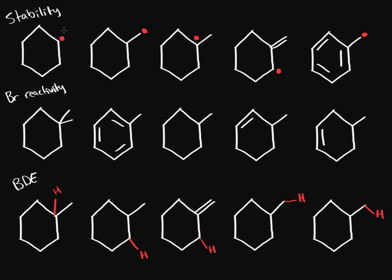Starting with the first one: we have a secondary carbon here, so we label it secondary. Here we have a primary carbon. Here we have a tertiary carbon. Here we have a secondary that's next to a carbon with a double bond, so we can have resonance — we're going to call this secondary allylic, or 'li' for short.